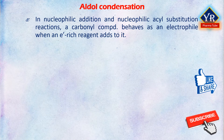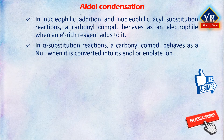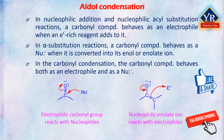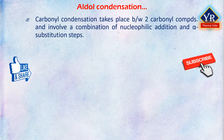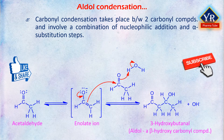In nucleophilic addition and nucleophilic acyl substitution reactions, a carbonyl compound behaves as an electrophile when an electron-rich agent adds to it. In alpha substitution reactions, a carbonyl compound behaves as a nucleophile when it is converted into its enol or enolate ion. In the carbonyl condensation reaction, the carbonyl compound behaves both as an electrophile and as a nucleophile. Carbonyl condensation reaction takes place between two carbonyl compounds and involves a combination of nucleophilic addition and alpha substitution steps.